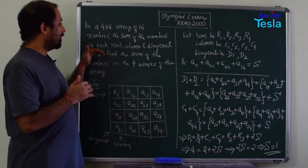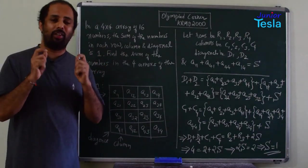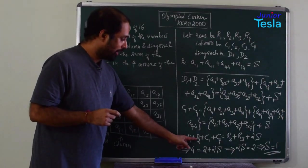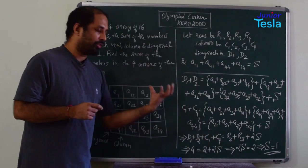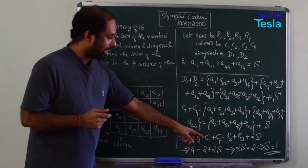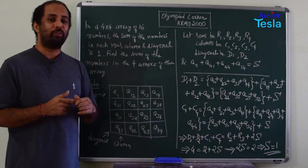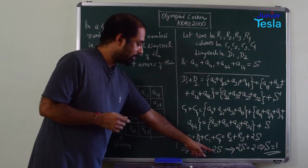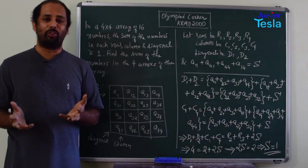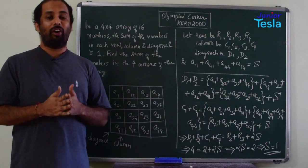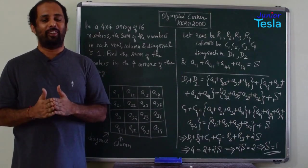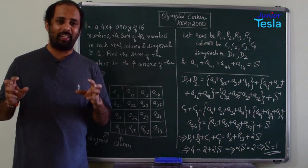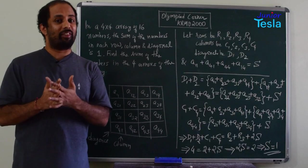As we have seen in the problem, every row, every column, every diagonal is 1. So d1 is 1, d2 is 1, c1 is 1, c4 is 1. The total left hand side is equal to 4. Right hand side we have r2 plus r3 which is equal to 2. So 4 is equal to 2 plus 2S or 2S equal to 4 minus 2 which is equal to 2 or S equal to 1 which means if you have taken the corner entries, 4 corner entries and added them, the sum is equal to 1.